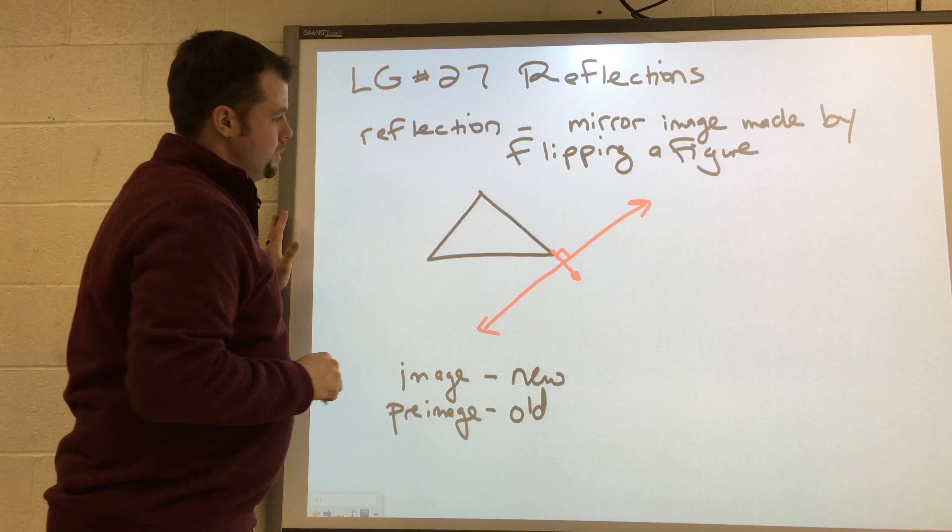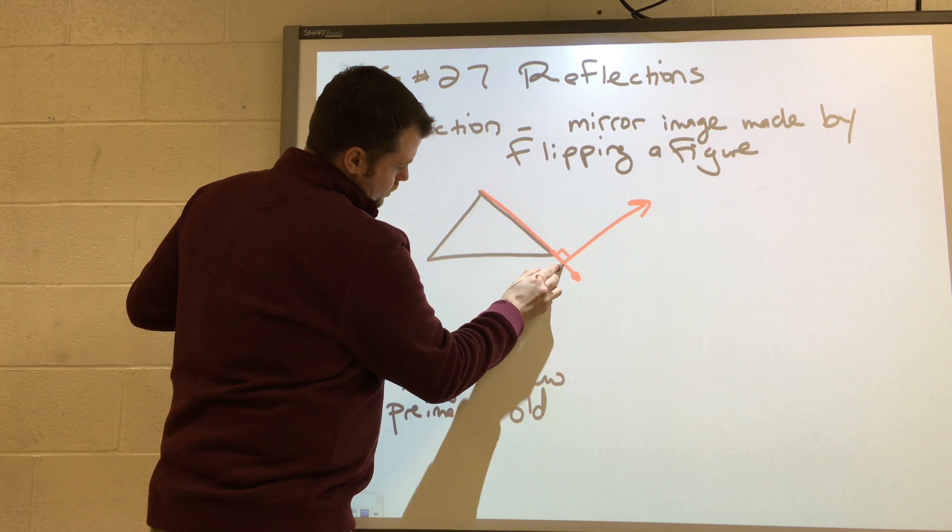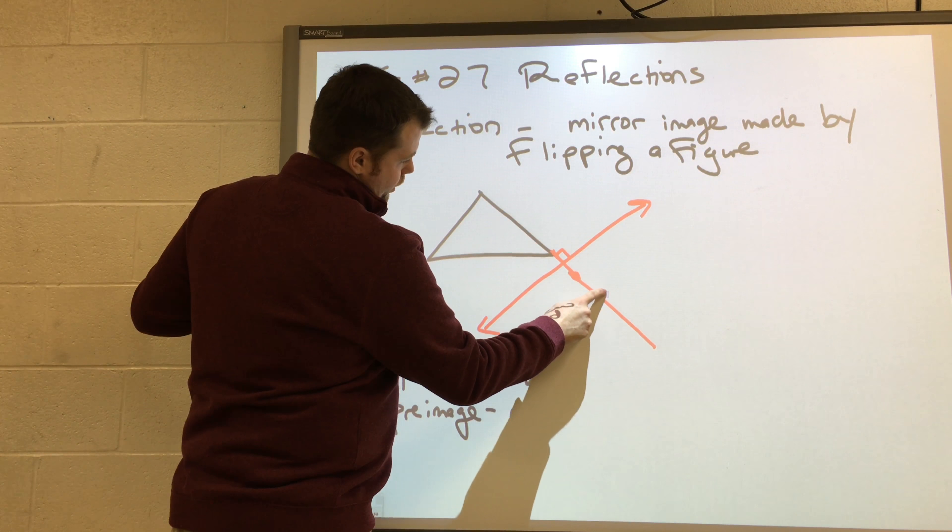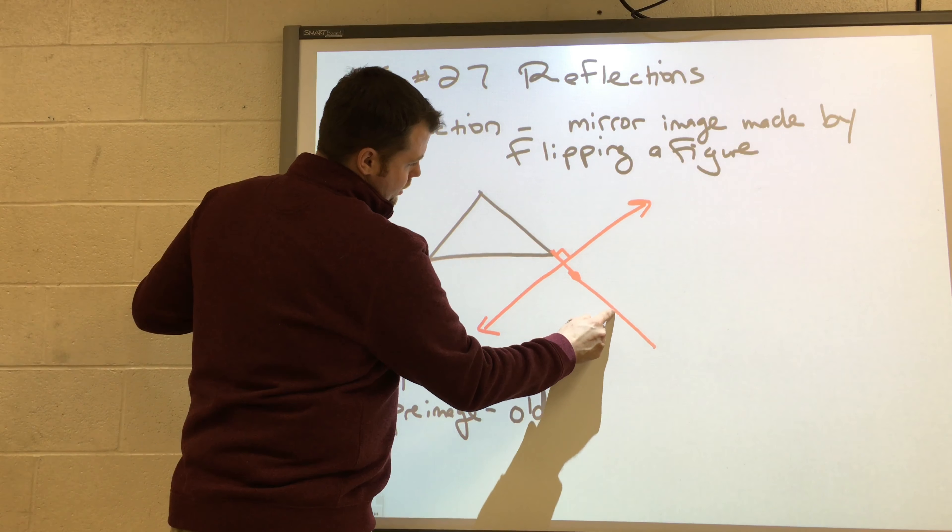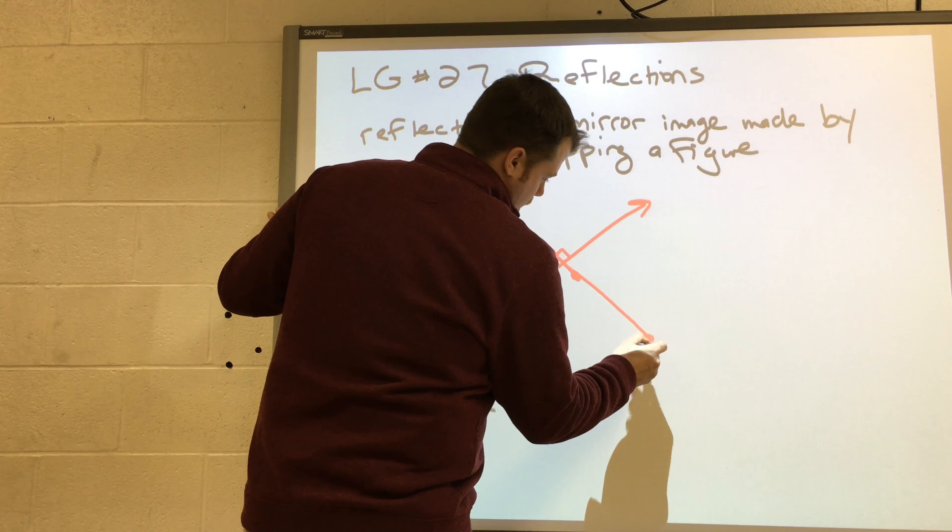So I move it straight across. Then I take this next point. I'm going to move it the same distance across the line and put a point.